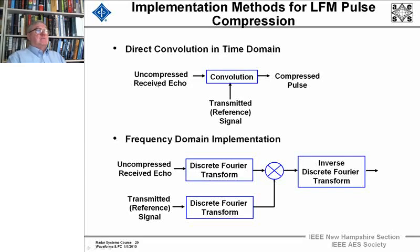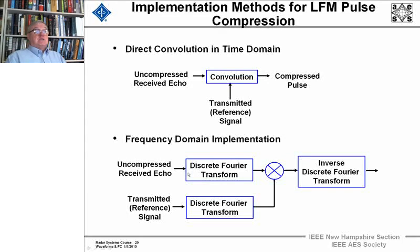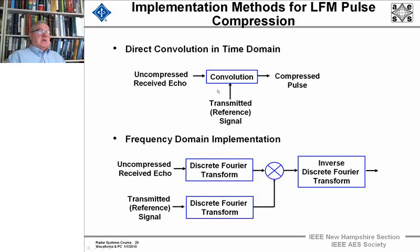There are different methods for implementing linear pulse compression. In direct convolution in the time domain, the uncompressed received echo is convolved with the attenuated reference transmit signal to produce the compressed pulse. In the frequency domain implementation, a discrete Fourier transform (DFT) is taken of the received echo, a DFT is taken of the attenuated reference signal, the two DFTs are multiplied, and an inverse DFT is taken — a digital implementation of convolution — and out comes the compressed pulse.